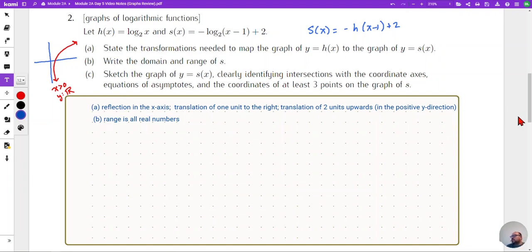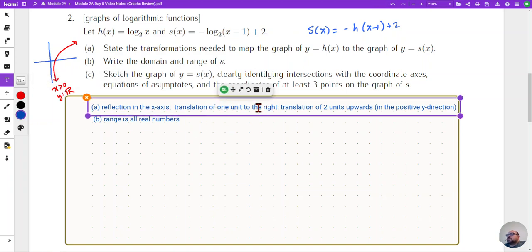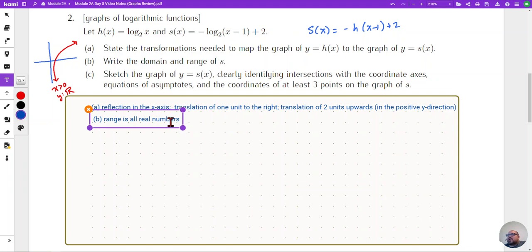Then if we consider our domain, our x values, well we translate one unit to the right and so that's going to move our entire graph one unit to the right. Translating upwards in the positive y direction is an effect on the range, range is all real numbers and I move it up by two units, not changing it.